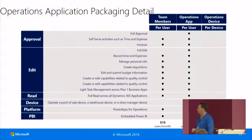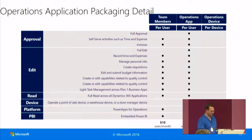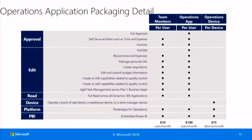Some examples of possible scenarios where you can use the different license types: full approval requires a full user, not a surprise. But self-service activities like time and expense — even approval — are possible with team members. Full edit rights require the Operations app, not the team member user. But recording time and expenses — all of that is possible with team members. You should be able to get the slides, so I don't have to read everything.